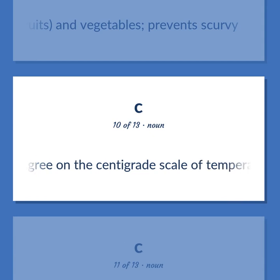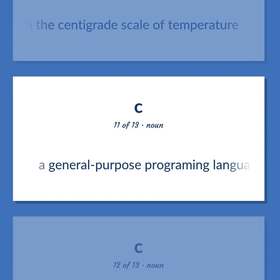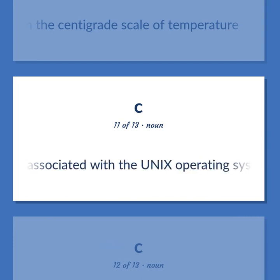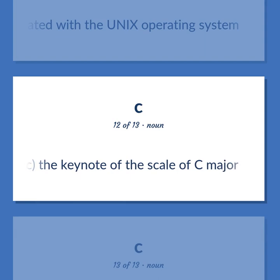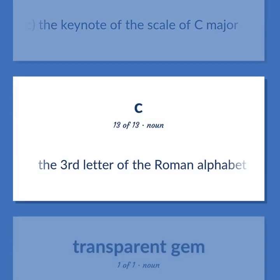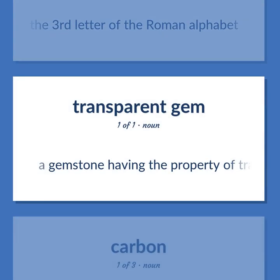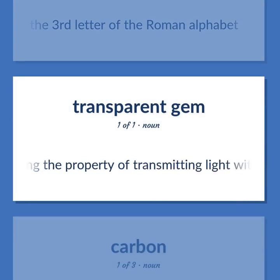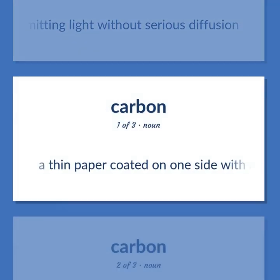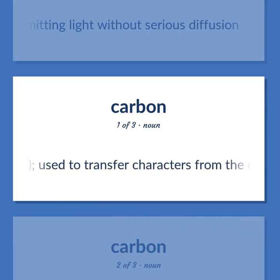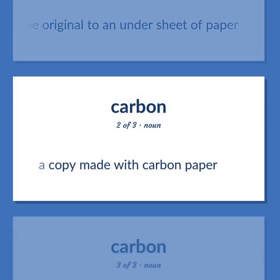A degree on the centigrade scale of temperature. A general-purpose programming language closely associated with the Unix operating system. Music: the keynote of the scale of C major. The third letter of the Roman alphabet. A gemstone having the property of transmitting light without serious diffusion. A thin paper coated on one side with a dark waxy substance, often containing carbon, used to transfer characters from the original to an under sheet of paper. A copy made with carbon paper.